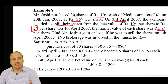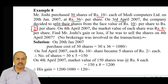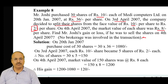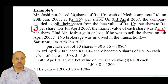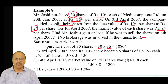In mathematics, whenever we solve problems, it is best to read and understand what is given carefully. On 20th January 2007, Mr. Zoshi purchased 30 shares of Medi Computers Limited at rupees 36 per share. The total purchase cost is 30 shares multiplied by rupees 36 per share, which equals rupees 1,080. This is the purchase cost.